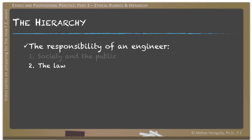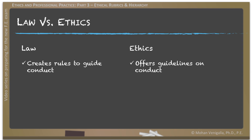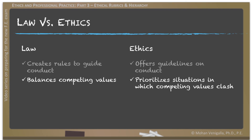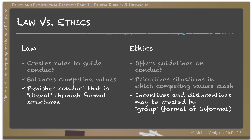Today nobody would deny that it was unethical to prevent women from voting in 19th century America, but it wasn't until the early 20th century that women could vote legally — and that's the power of ethics over law. Law creates rules and guides conduct whereas ethics offers guidelines; law balances competing values whereas ethics prioritizes situations where competing values clash. Law punishes illegal conduct through formal structures, whereas violating ethics may cost you your license rather than jail time.